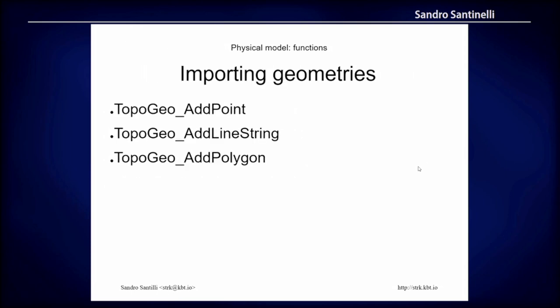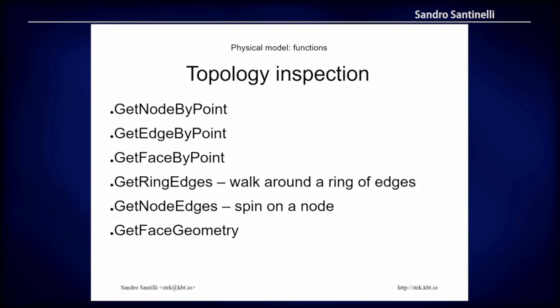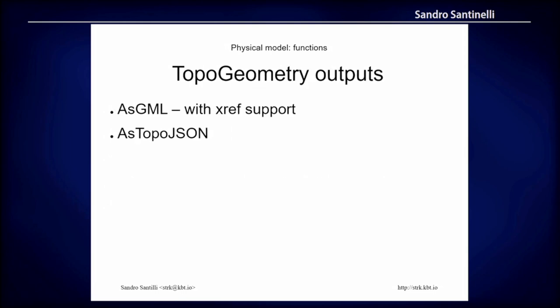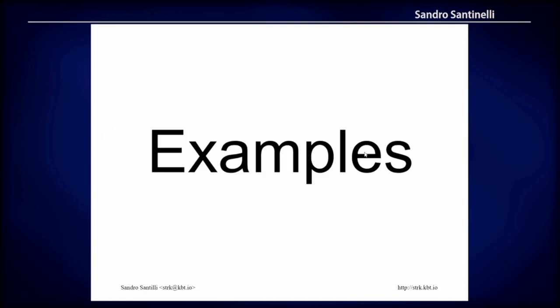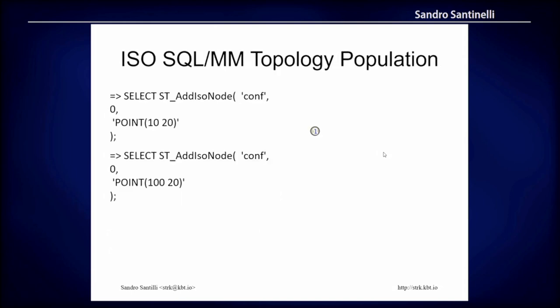There are functions to create and populate the topology, functions to inspect the topology, and TopoJSON output for a topo geometry. By using the underlying topology you can avoid sending duplicated borders to a client when sending a full coverage — you will send each border exactly once.